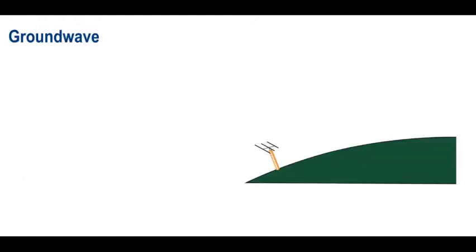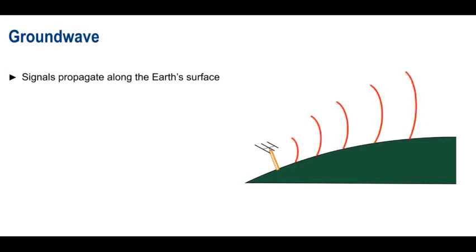If we don't have a direct line of sight to another station, ground wave is another possible solution. Ground wave, sometimes also called surface wave, involves signals propagating along the surface of the Earth. Interaction between the lower part of the transmitted wavefront and the Earth's surface causes the wave to tilt forward, allowing the signal to follow the curvature of the Earth, sometimes well beyond line of sight.